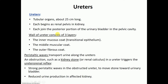The ureter wall is made out of three layers. The inner mucus layer is lined with transitional epithelium. If you remember when we talked about different kinds of epithelial cells, transitional epithelium is also nicknamed uroepithelium, and the majority of the rest of the urinary system is lined with transitional epithelium.